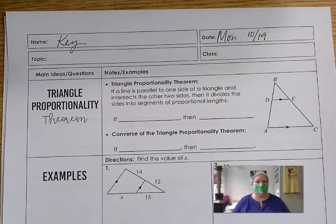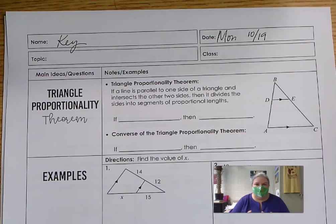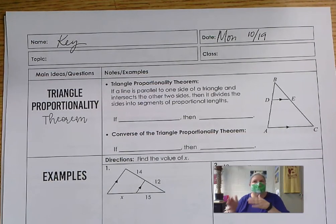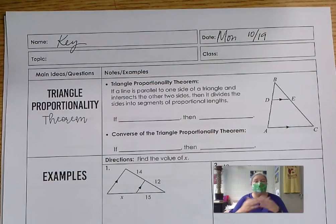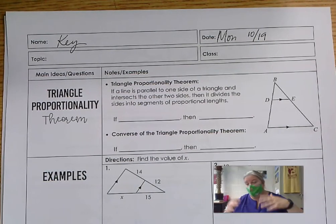Hello, geometers. I am here to talk to you about triangle proportionality and also some other proportionality situations. This is in our unit on similarity, and these are topics that are generally covered in a unit on similarity, but they're not just about triangles. It's more about situations that are about proportionality and where proportionality comes into play in a way that makes it a theorem — a true statement that's always going to be like this when these conditions are met.